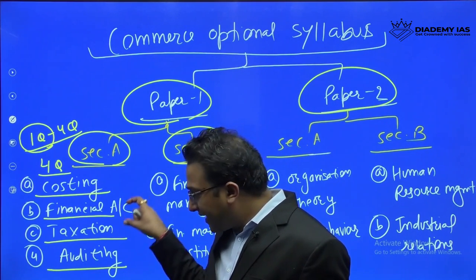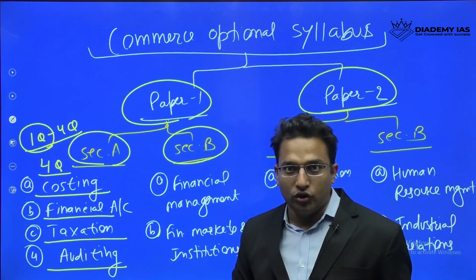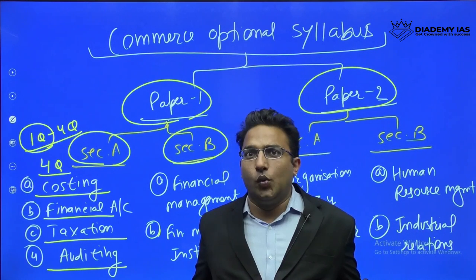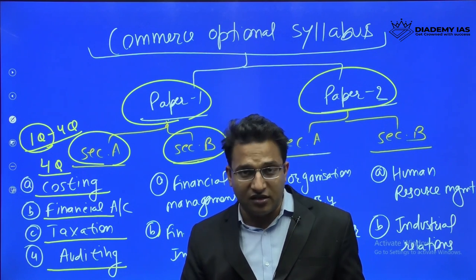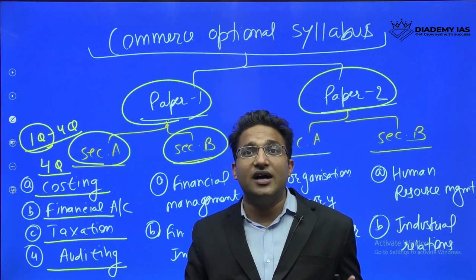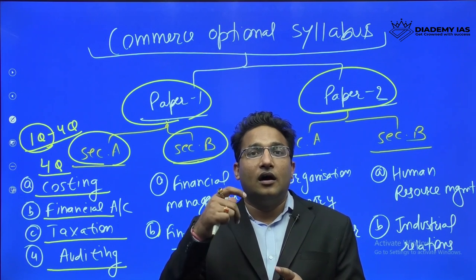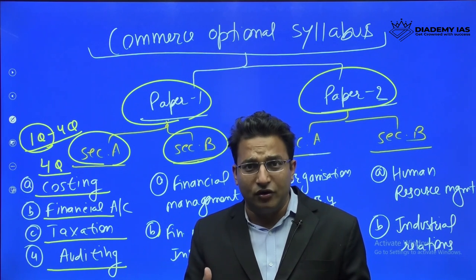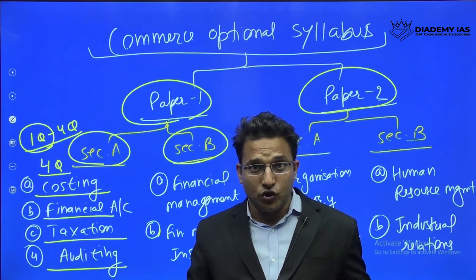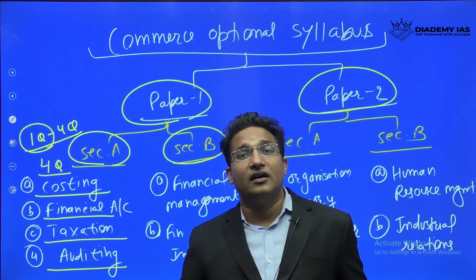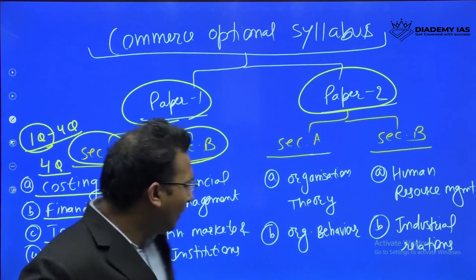In Section A, the importance of Costing and Financial Accounting is highest, then Taxation, and finally Auditing. The strength of numerical and theory questions is almost equal — in fact theory is slightly higher many times because Question 1 is theory only. However, some questions fall in a middle category, for example process accounts with normal loss and abnormal loss, which require examples. So it's roughly 50% theory and 50% numerical.